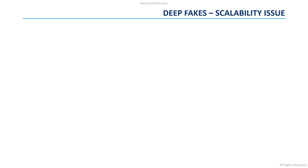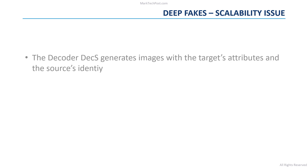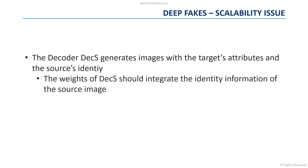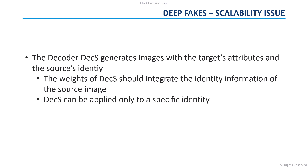Unfortunately, this approach has a scalability problem. The encoder enc extracts the target's features, which contain both the identity and attribute information of the target image. Then the decoder deckS has to generate an image with the target's features and the source's identity. This means that the identity information of the source image must be integrated into the weights of decoder deckS, so this decoder can only be applied to a specific identity.